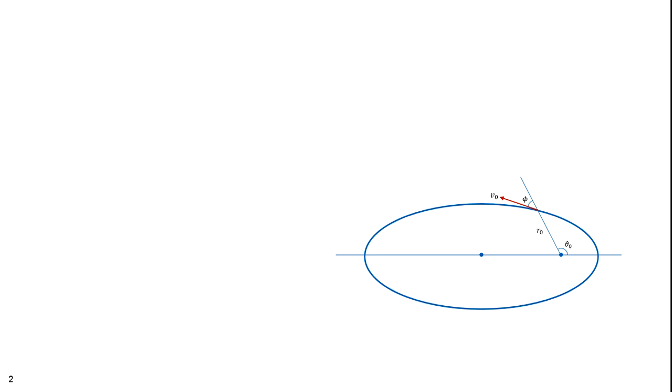Now that we understand the factors that determine the orbit of a planet or a satellite, let's determine how an orbit can be found if some initial conditions are known.